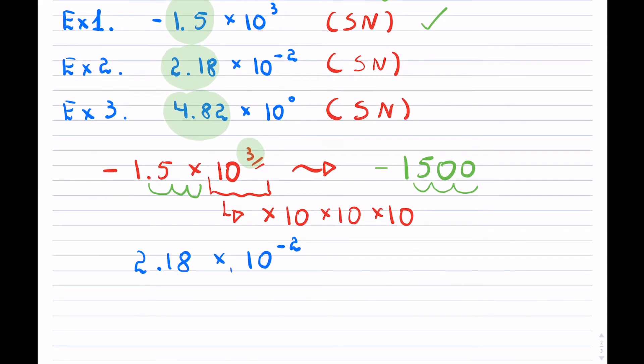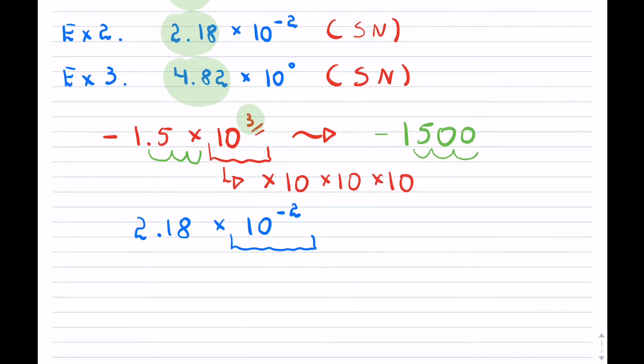So again, just so that you recall, when it is positive, we multiply by powers of 10. And when it is negative, we're actually dividing by powers of 10.